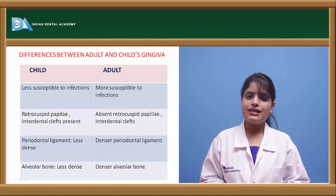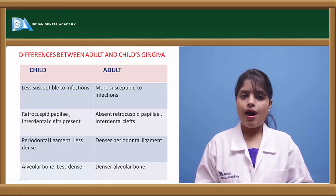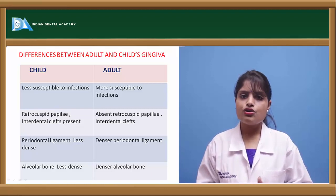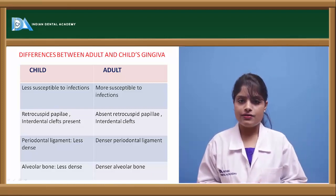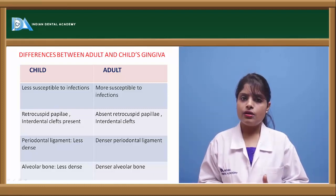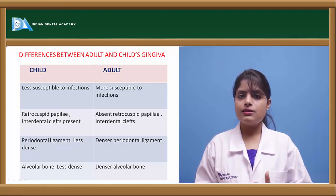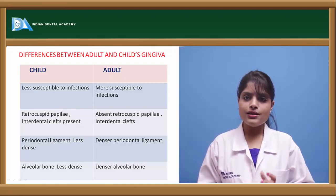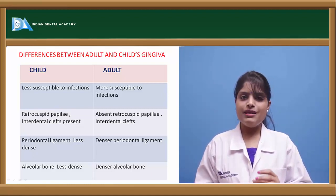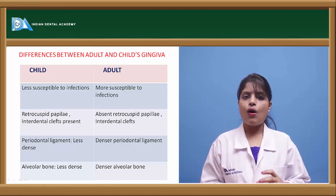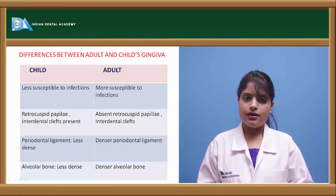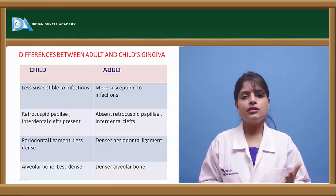The periodontal ligament fibers are lesser in density and less mature than those of adult gingiva. Retrocuspid papilla and interdental clefts are peculiar features of attached gingiva in children but absent in adults. The retrocuspid papilla is a depression present approximately one millimeter below the canine area, or in the marginal groove beneath the gingiva of the canine on the lingual side.